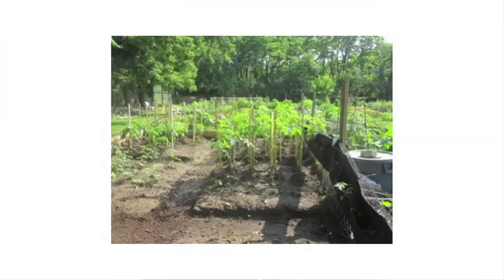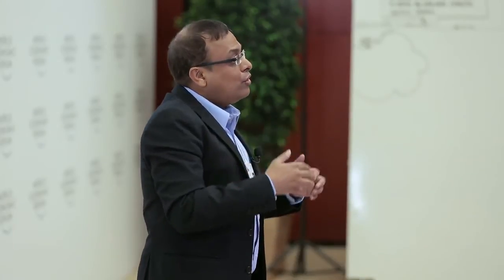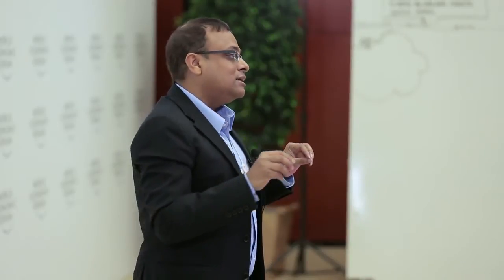Here we have community gardens as one example where the community worked together in identifying what the food deserts are, what the problems in accessing food are, and developing a food garden where they could secure access to healthy food. Through these processes, it was ensured that the community addressed the kinds of solutions that they see fit.